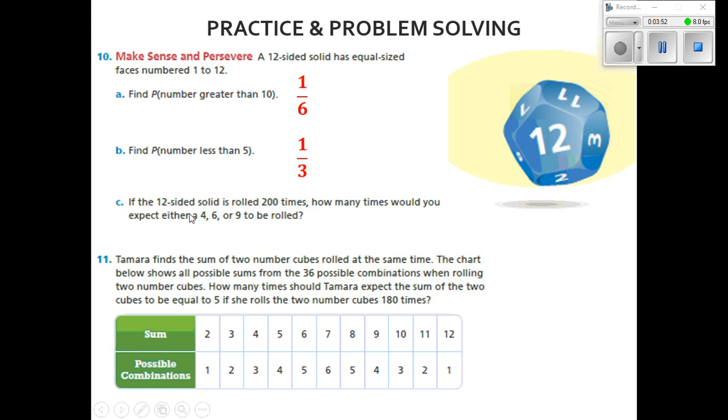If the 12-sided solid is rolled 200 times, how many times would you expect either 4, 6, or 9 to be rolled? Well, that's 3 different numbers out of 12. So that's 3 out of 12, which can be rewritten as 1 out of 4.